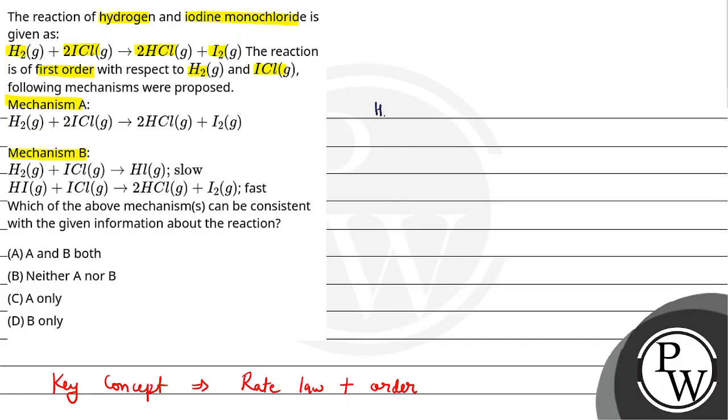In the question, we have the reaction H2 plus 2 ICl gives 2 HCl plus I2 molecule. This is a first order reaction with respect to H2 and ICl. If we write the rate law, we have R equals K into concentration of H2 into concentration of ICl. Here H2 and ICl have order 1 each. That's why these two powers are 1 each.